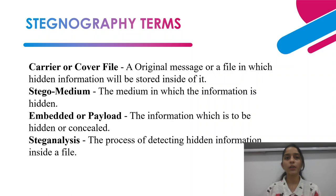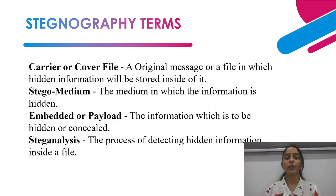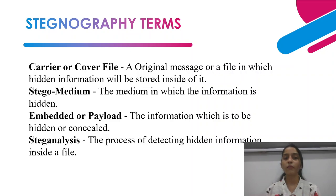Before going further, let me explain some steganography terms. A carrier or cover file is the original file in which the hidden information will be stored. The stego medium is the medium in which the information is hidden — it can be an image, video, or audio. The embedded data or payload is the information which is to be hidden — our secret message. Stego analysis is the process of detecting hidden information inside a file, essentially the decipherment of our secret message.